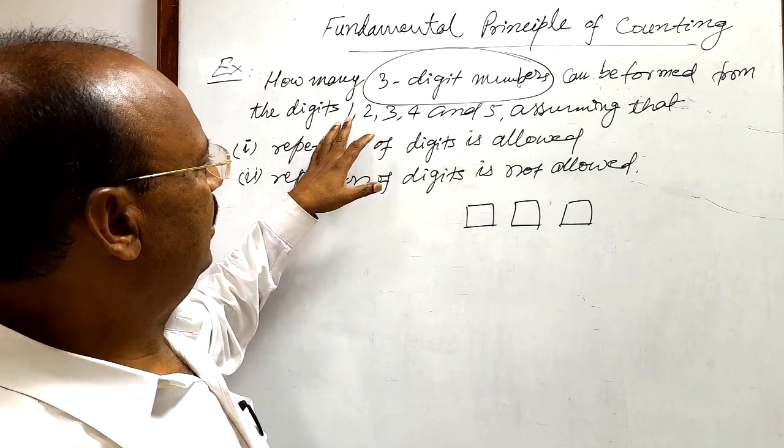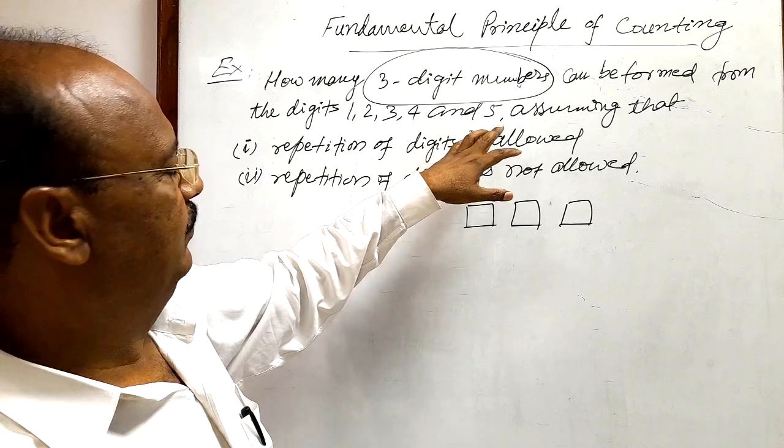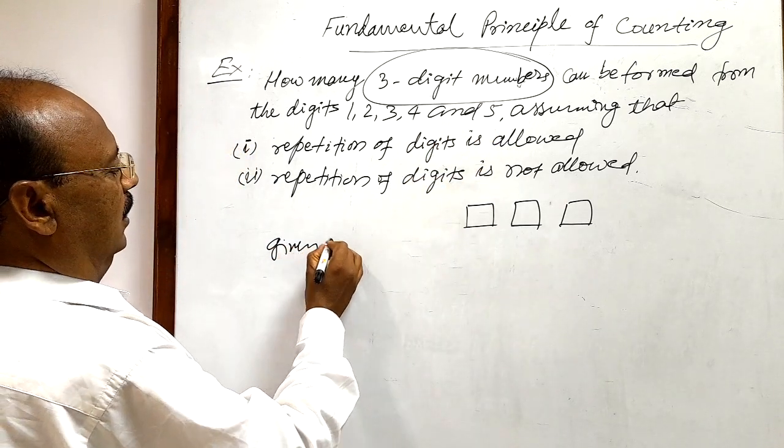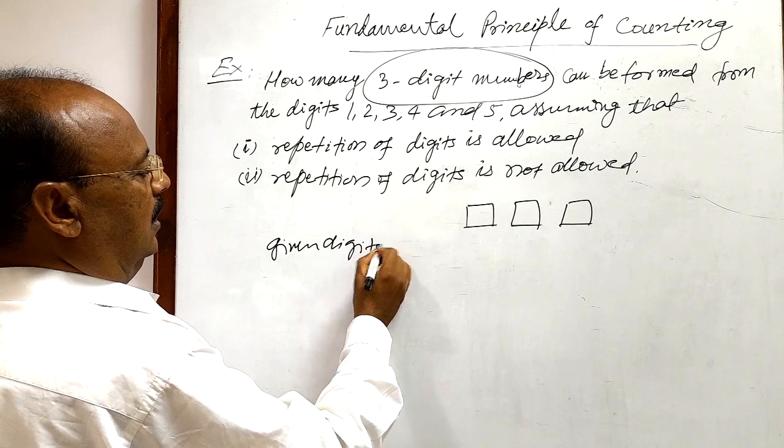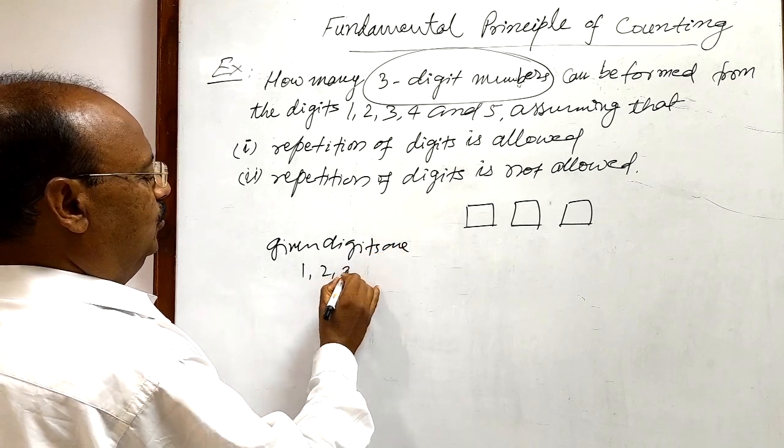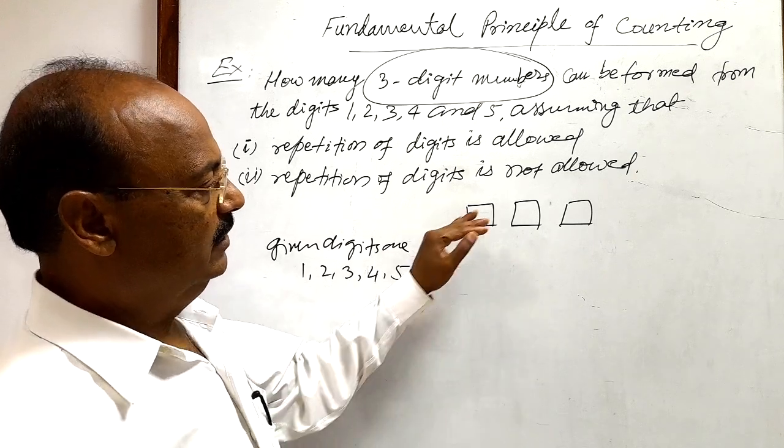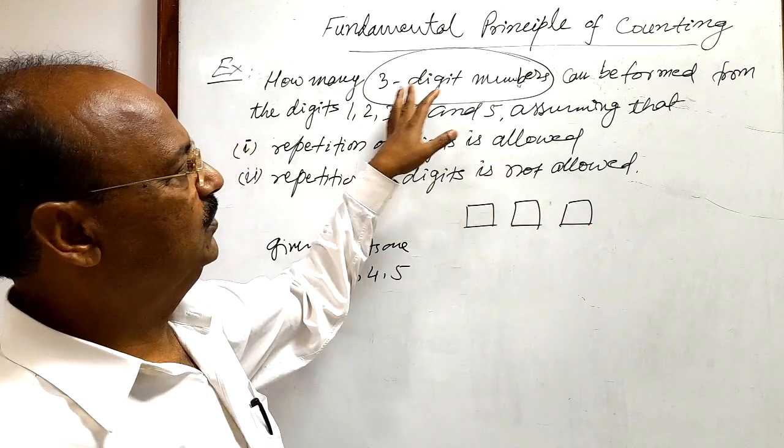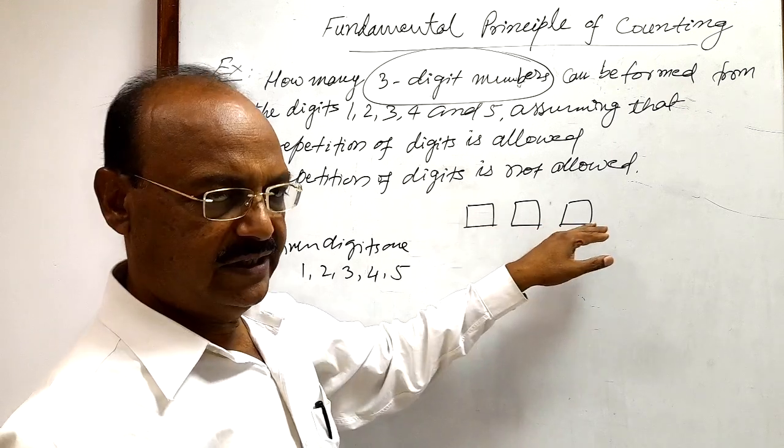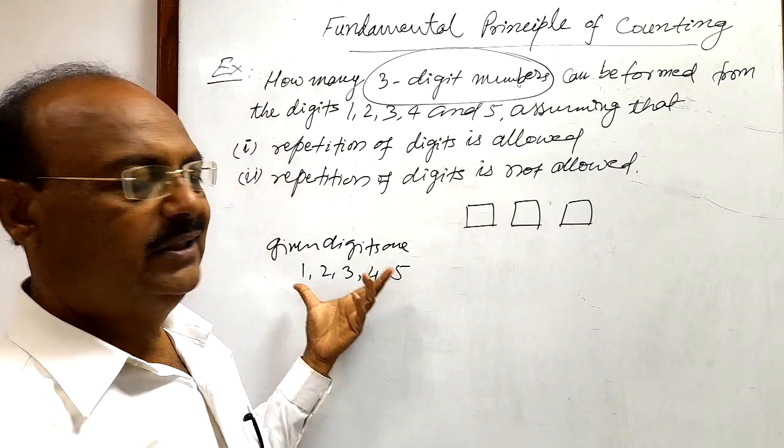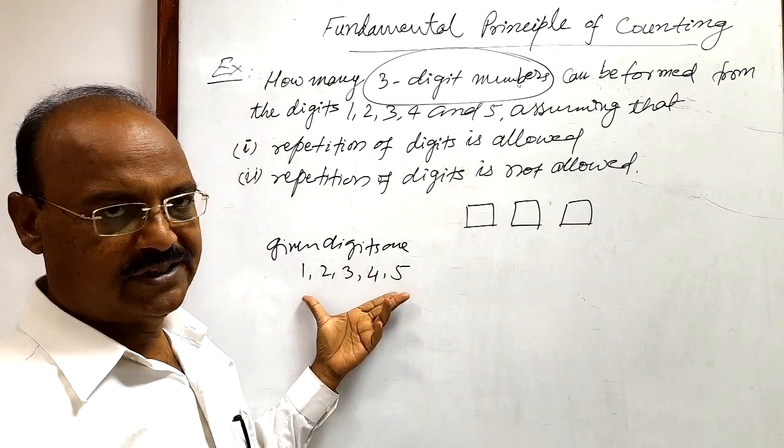How many digits are given here? 1, 2, 3, 4, and 5. So we are having given digits 1, 2, 3, 4, and 5, and we are having three places because we have to form three digit numbers. So we have to fill up these places with the help of these given five digits.